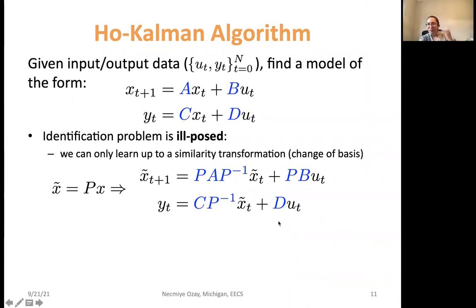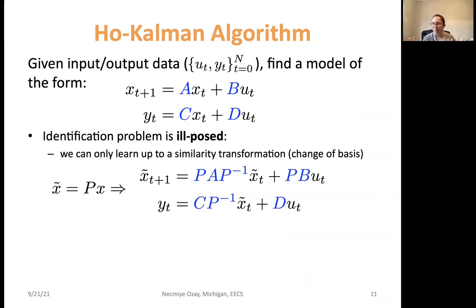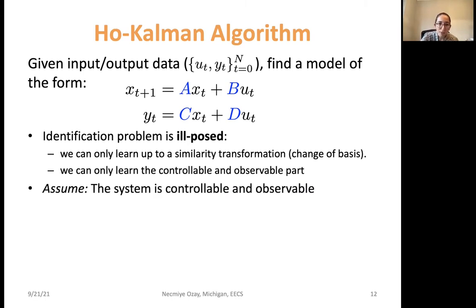This is standard: if you've taken any linear systems course, you know I can define a change of basis and cannot differentiate A, B, C, D from P·A·P⁻¹, P·B, C·P⁻¹, D. This tells us we should pick our accuracy objective carefully — we should be close to the equivalence class of systems and measure closeness to that equivalence class. The other source of ill-posedness is that we can only learn the controllable and observable part of any linear system, so we assume the system is controllable and observable, or we are just learning that part.